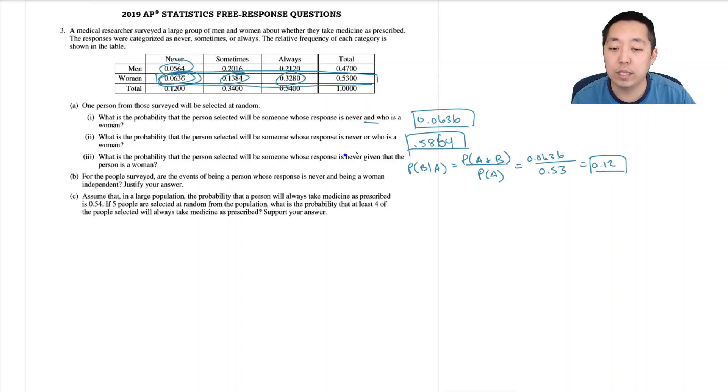For independence, what does it mean? You could think of it as probability of B given A equals the probability of B. In this case, the probability of B given A we already did - this is 0.12. Let me list: A is a woman and B is never. So the probability of never given it's a woman, does it equal the probability that it's just never? Probability of never is just 0.12. So yes, they're independent.